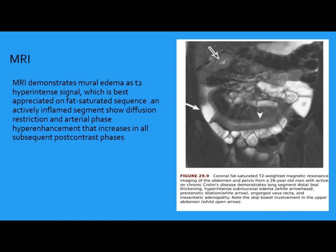On MRI, it is harder than CT. We use T2 fatty-saturated sequences. This MRI shows hypertrophy — this is hypertrophic mucosa. This is a T2 fatty saturation image showing dilation, and there is a stricture here. This arrow shows a normal bowel loop. This thickened mucosa is here, this one is dilated, this one is narrow, and this one is dilated.